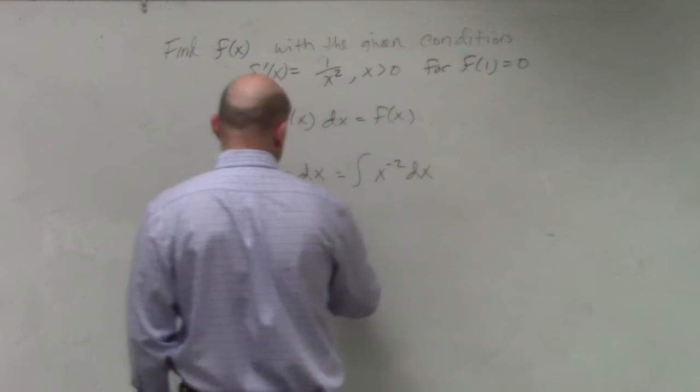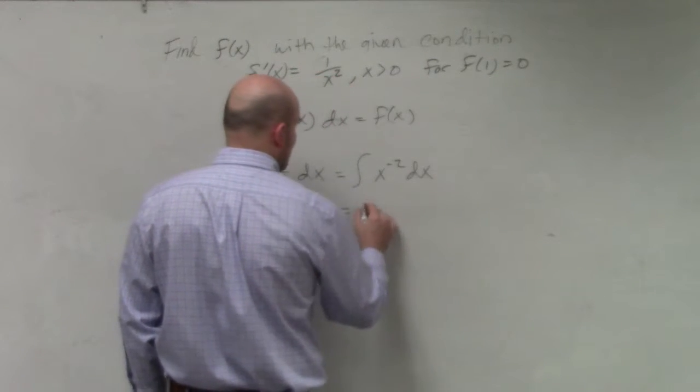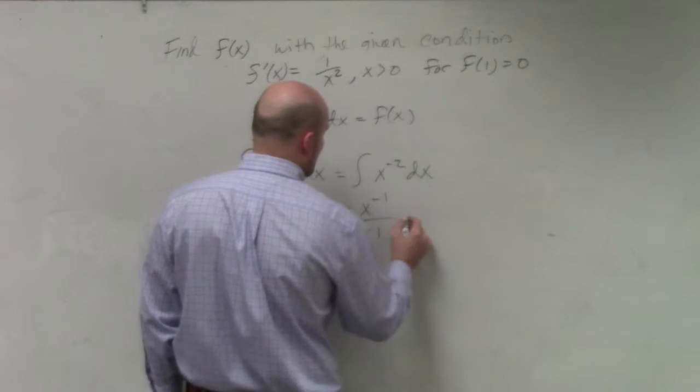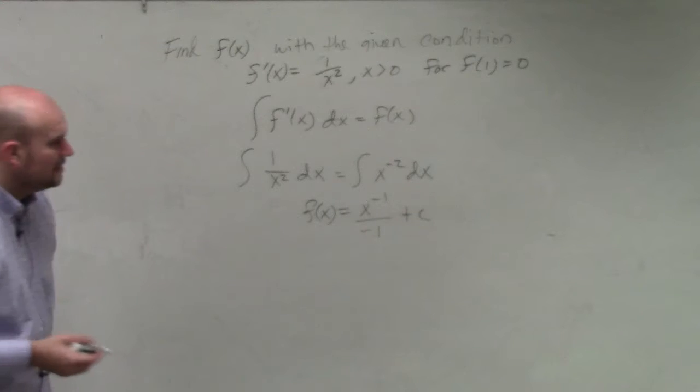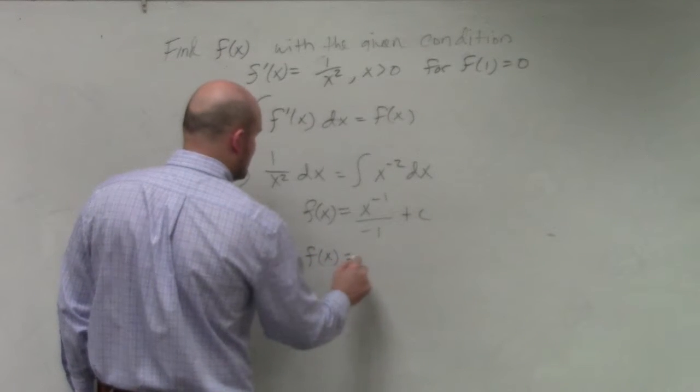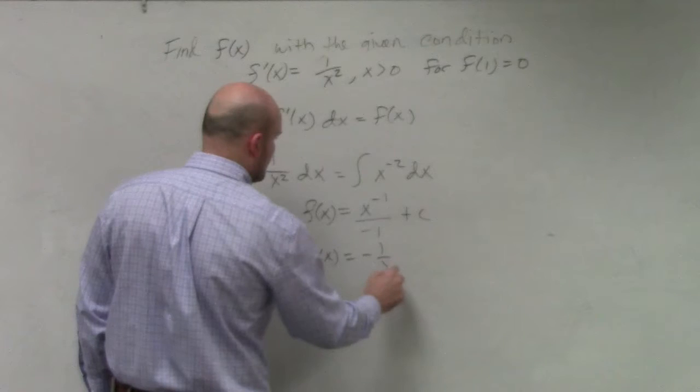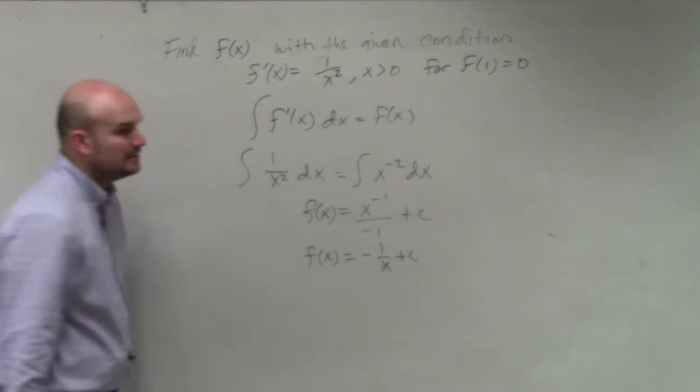So now when we go ahead and integrate this, which will be our f of x, we're going to have x to the negative 1 over negative 1 plus c, which in reality could also be written as f of x equals negative 1 over x plus c.